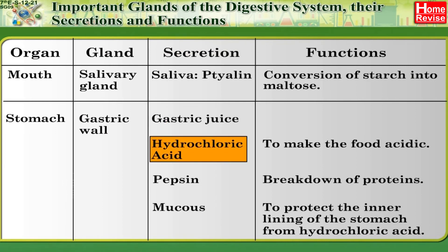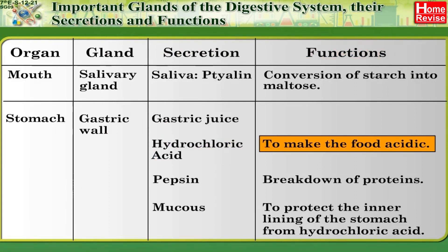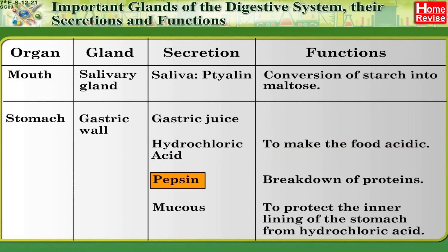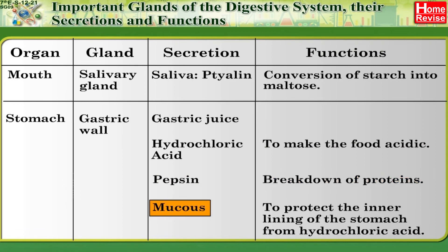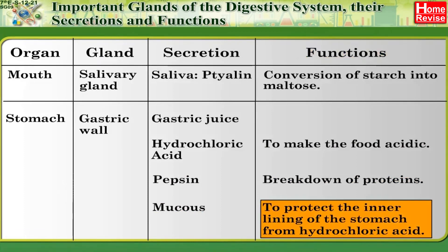Stomach: secretion — hydrochloric acid; function — to make the food acidic. Pepsin; function — breakdown of proteins. Mucus; function — to protect the inner lining of the stomach from hydrochloric acid.